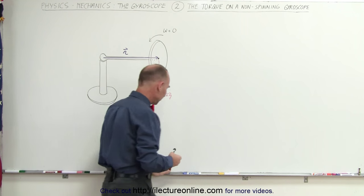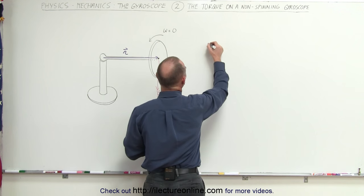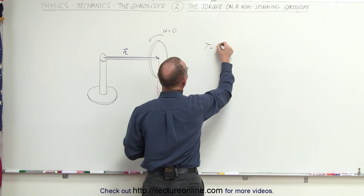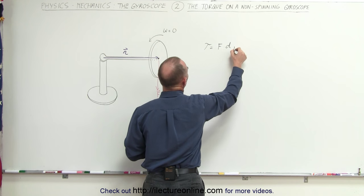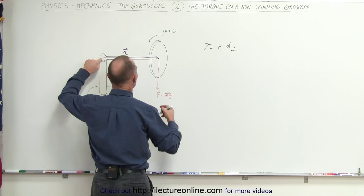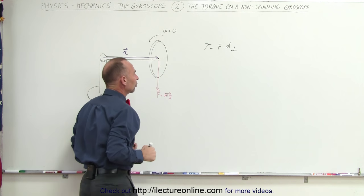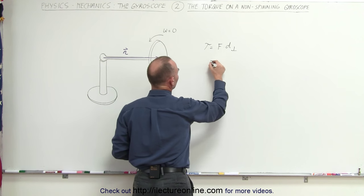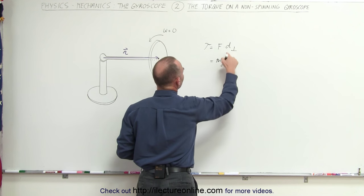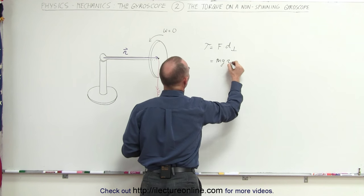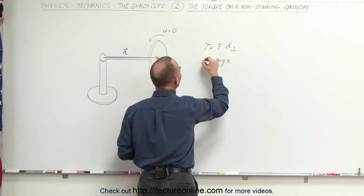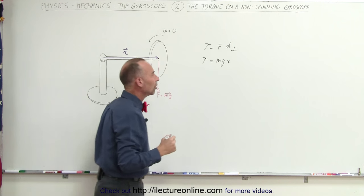You could say that the torque by definition, the magnitude of the torque, is equal to the force times the perpendicular distance from the point of rotation to the line of action of the force. The force is equal to mg and the distance would be equal to r. That means that the magnitude of the torque is equal to mgr.